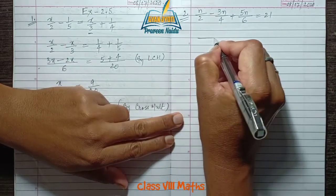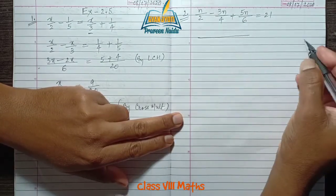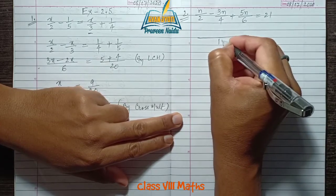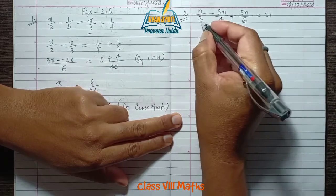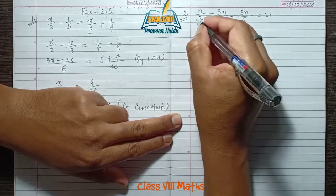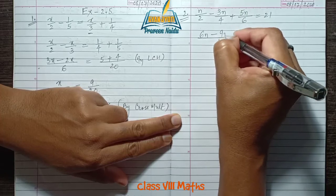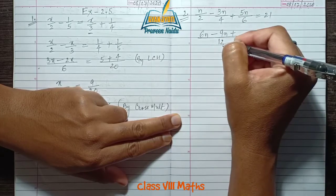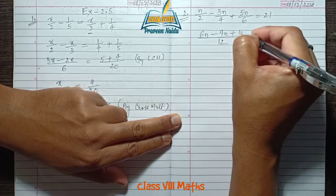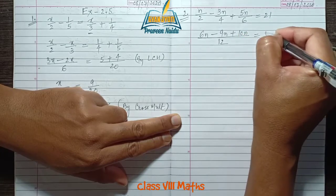Find the LCM of 2, 4, and 6, which is 12. By dividing the LCM by each denominator and multiplying by the numerator, we have (6n - 9n + 10n)/12.